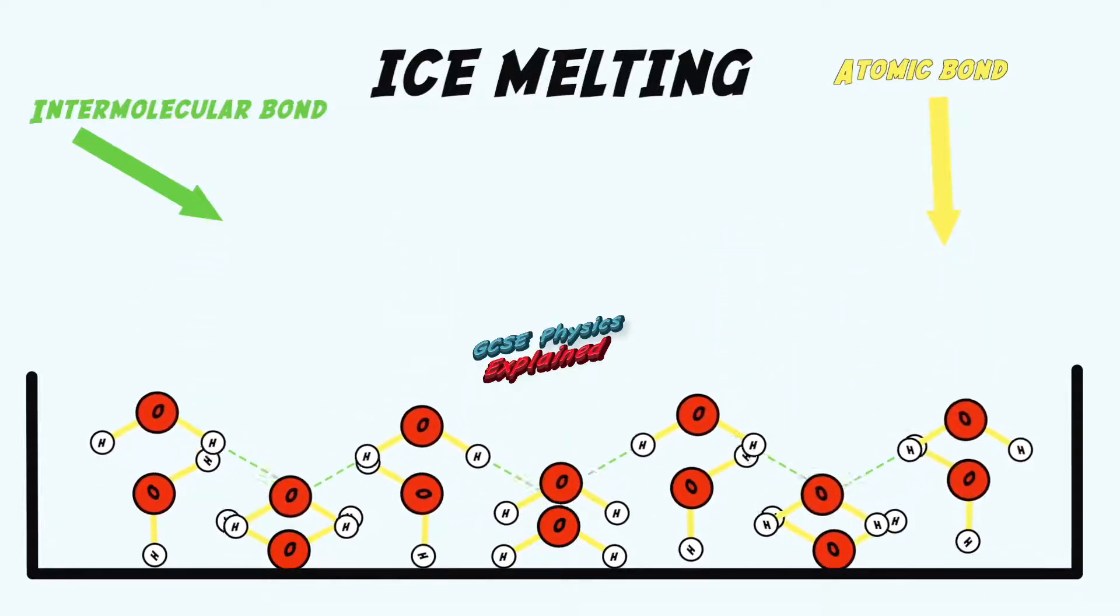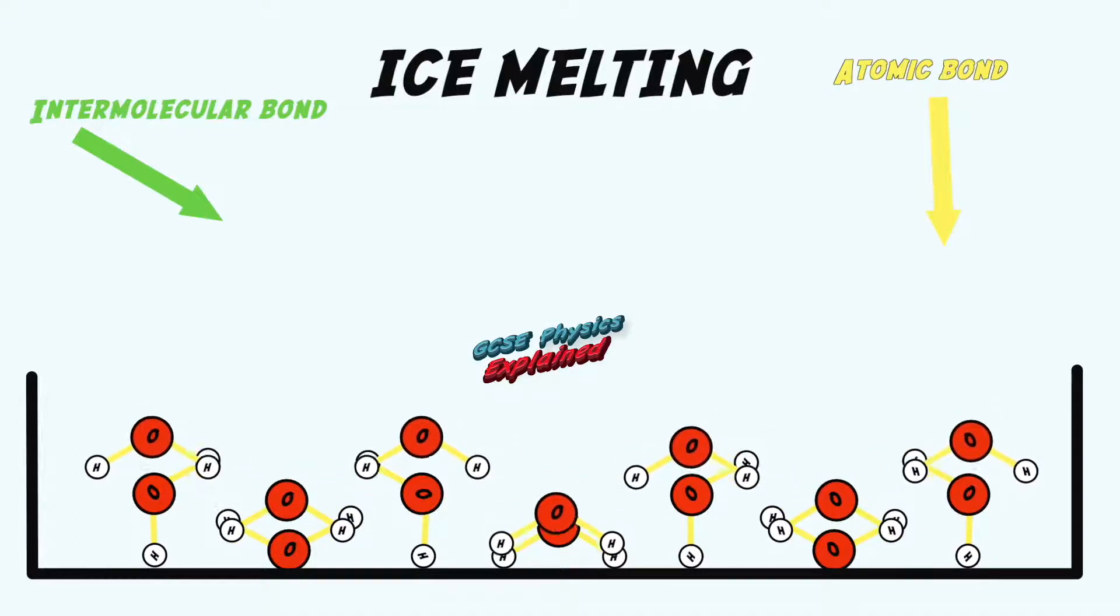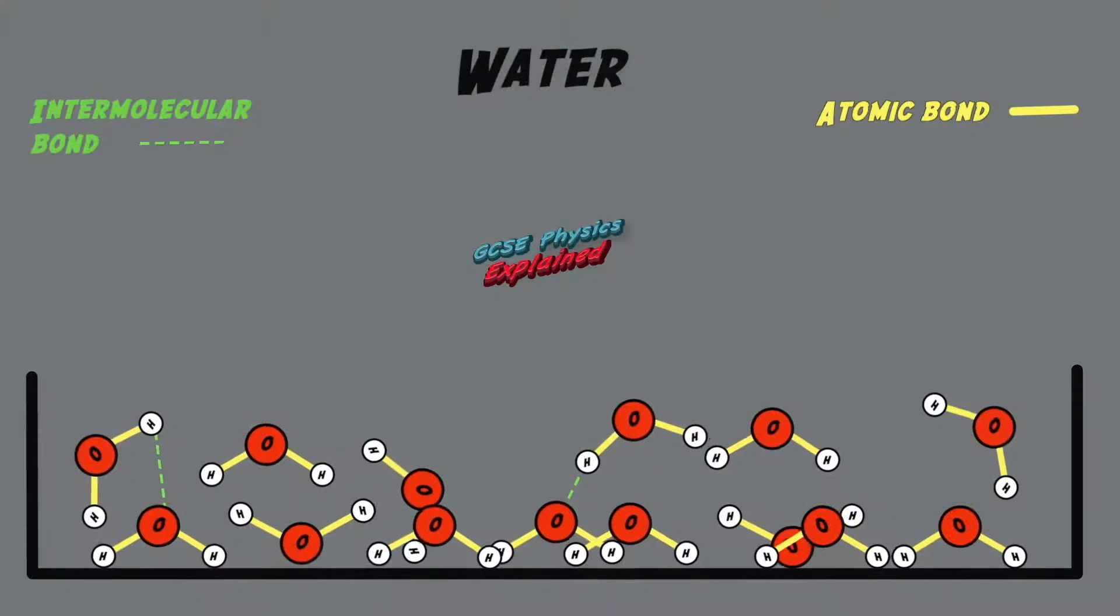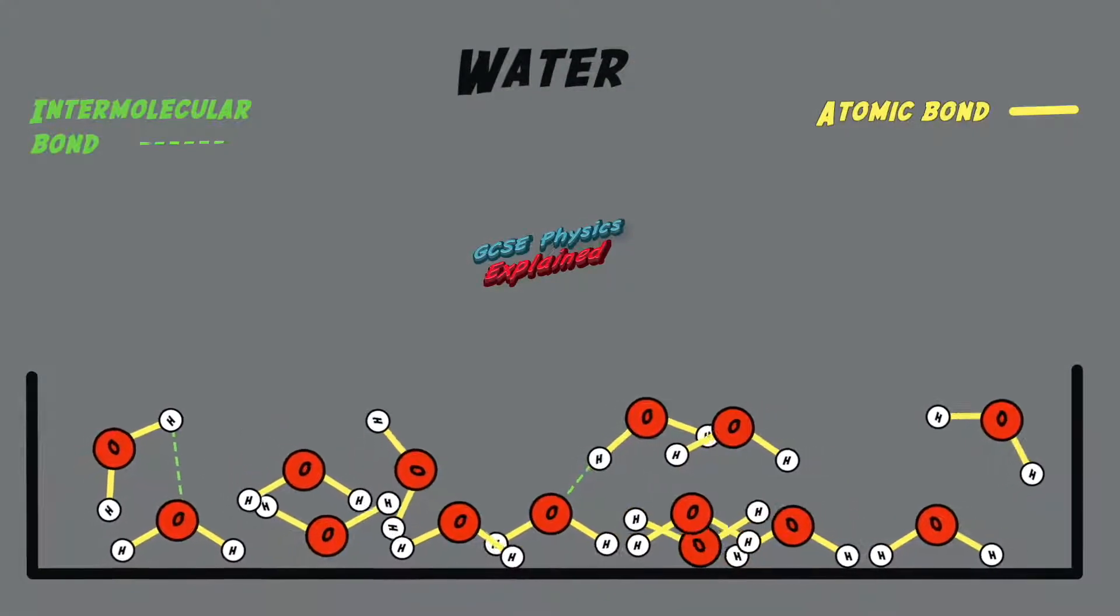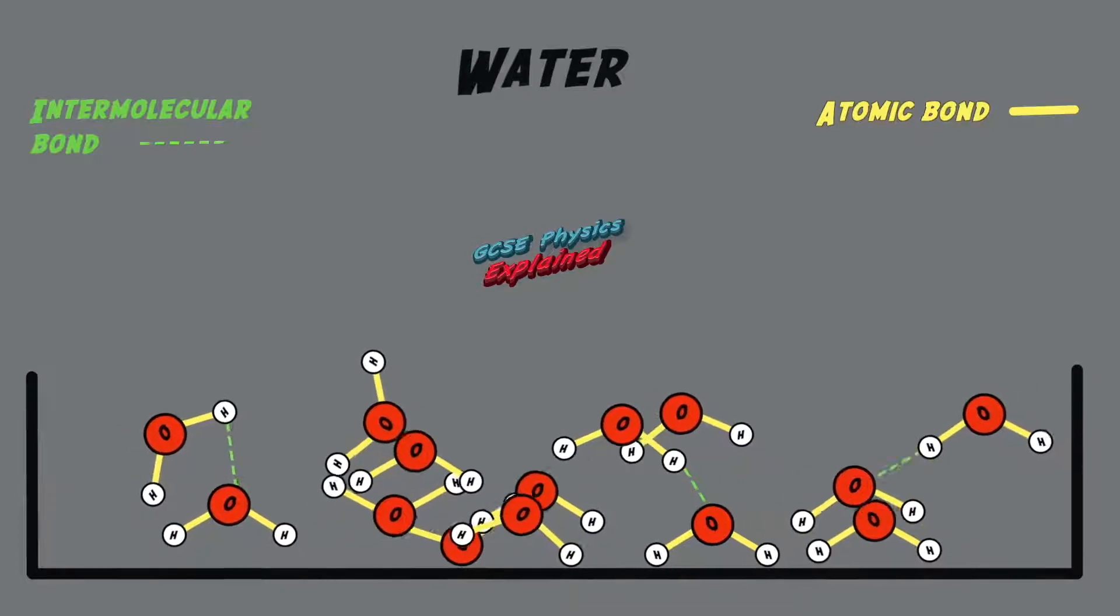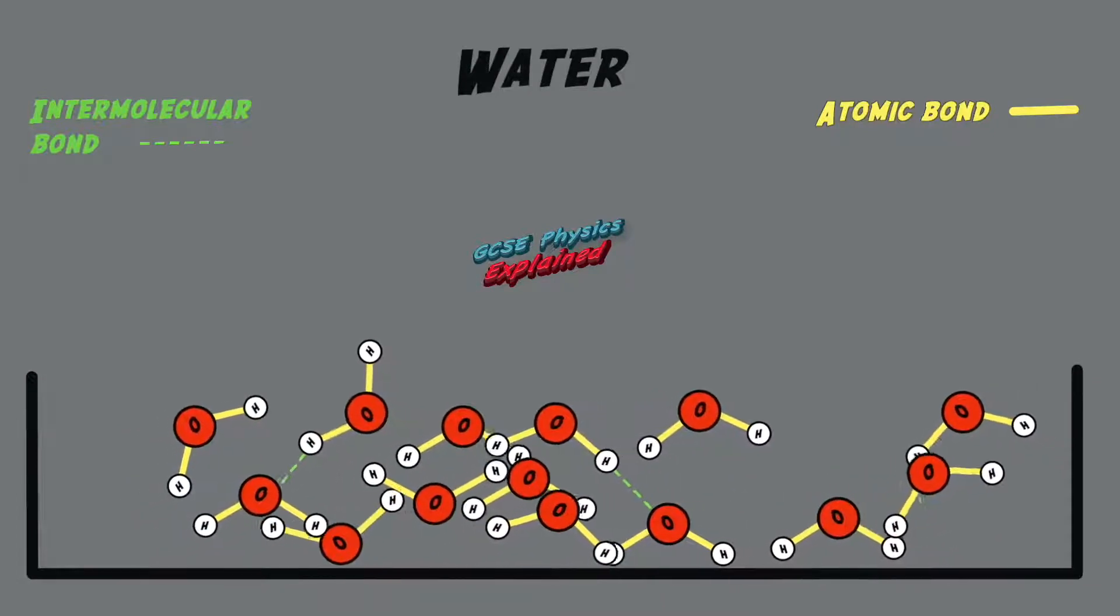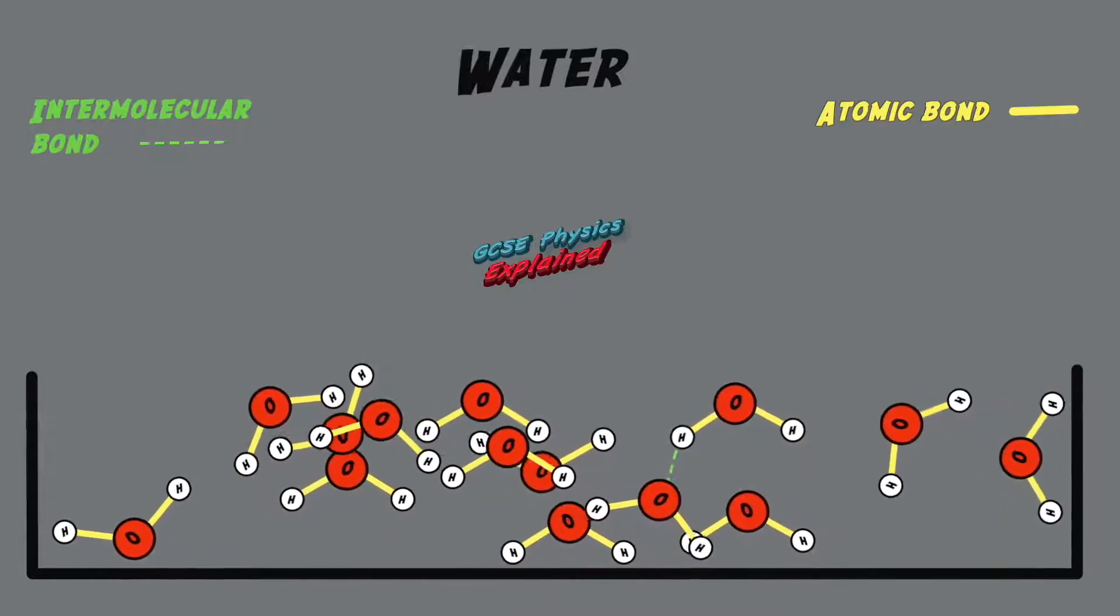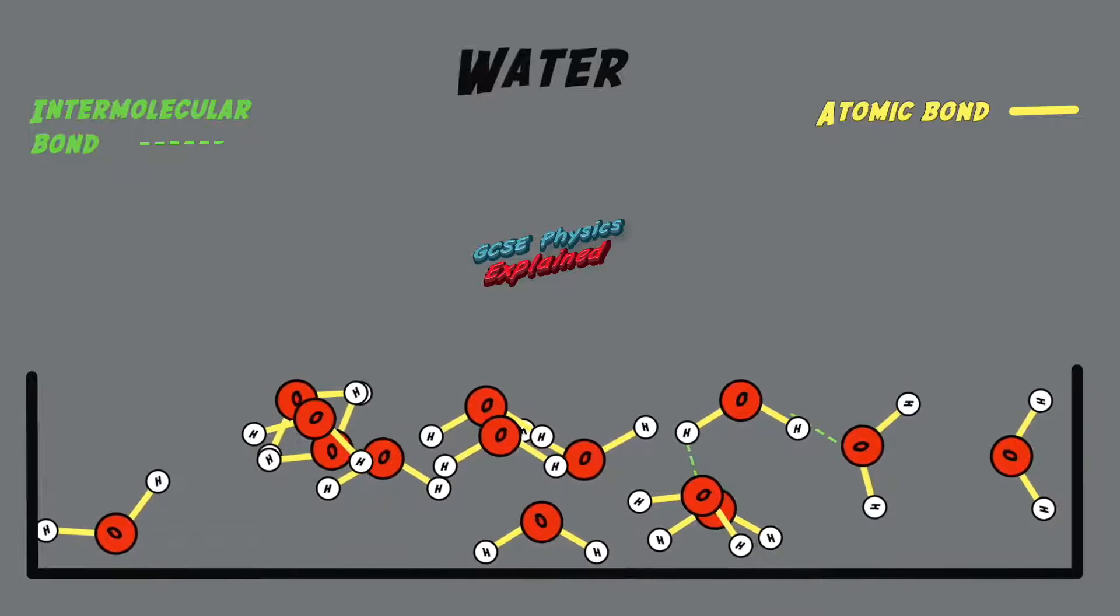Once all the intermolecular bonds have been broken, the solid will completely melt and turn into a liquid. Please note, once the solid melts into a liquid, intermolecular forces between the molecules still exist and constantly attract the particles back together, allowing intermolecular bonds to reform.